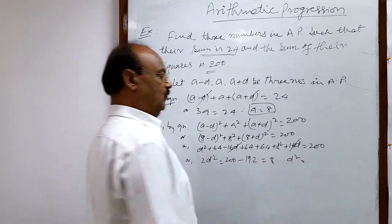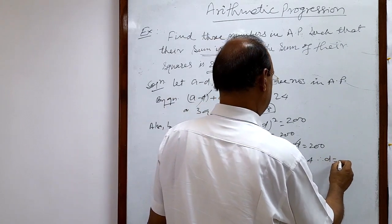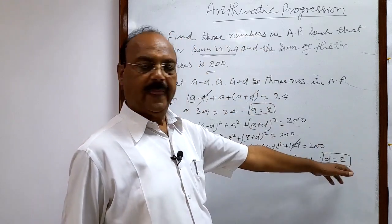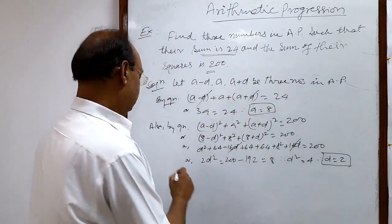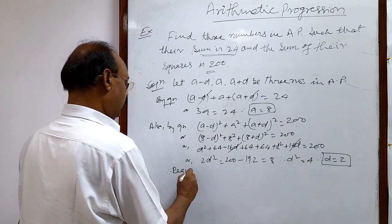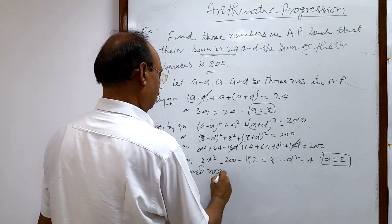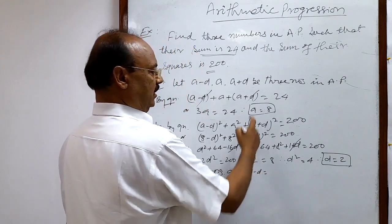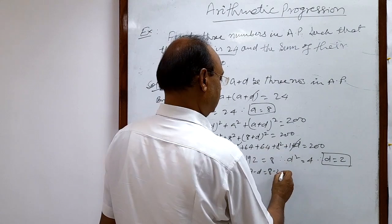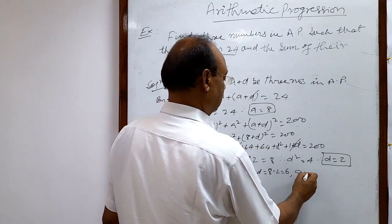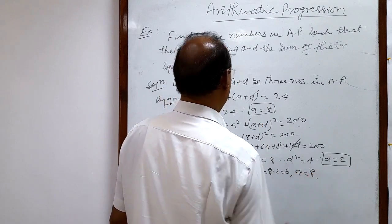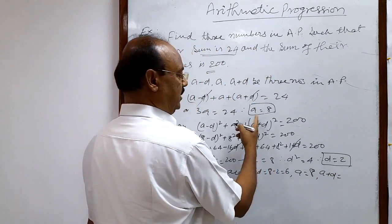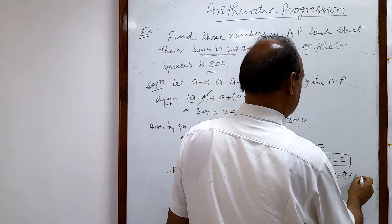So d squared equals 8 divided by 2, that is 4, and therefore d equals 2. Now we have the values of both a and d. The required numbers are: a minus d equals 8 minus 2 equals 6; a equals 8; and a plus d equals 10.